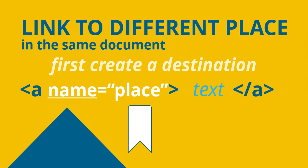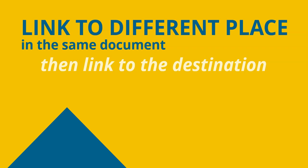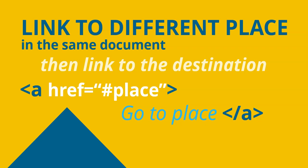Once you've created the bookmark destination, you create the link that goes to it from somewhere else on the page. You use the A tag around your link text with href, but the value must be a hashtag followed by whatever name you gave the bookmark — for example, href equals hash top. That's how you create the link pointing toward that bookmark.